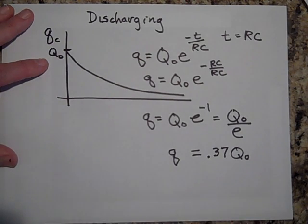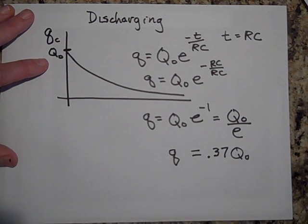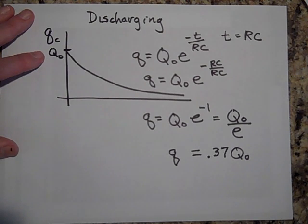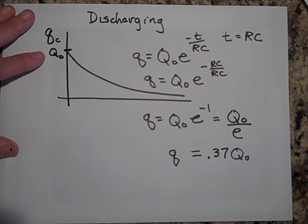So after one time constant, you get 0.37 of the original charge, or I'm going to just say you have about a third of your original charge.